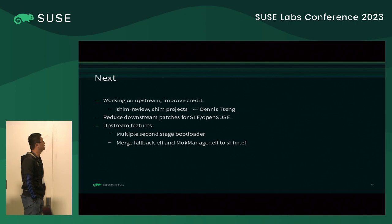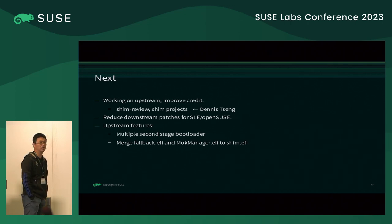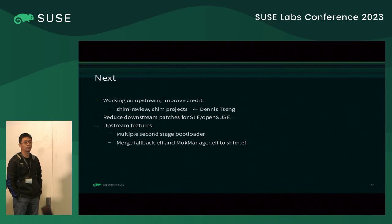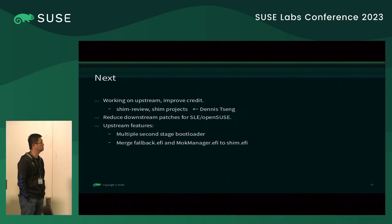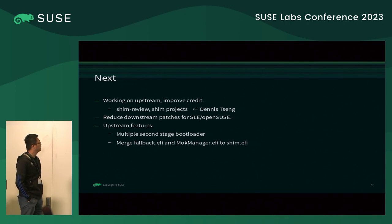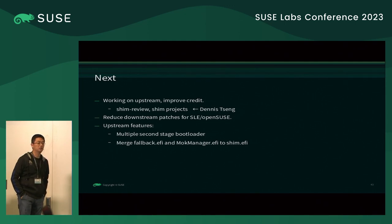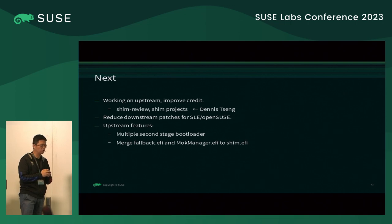The key point is the SHIM review. We are working upstream to improve our quality and help other distros review their SHIM. We hope other distro maintainers can also review our SHIM — we cannot review our own. So it is a cross-review. We also want to reduce downstream patches, because without downstream patches our SHIM is totally the same as upstream — the only difference might be the toolchain.